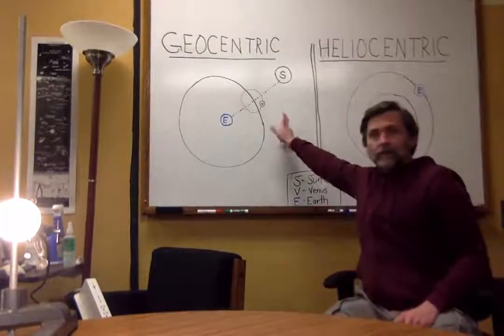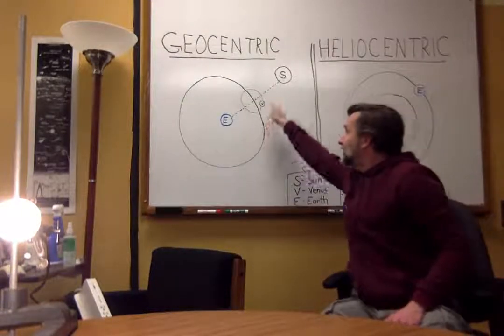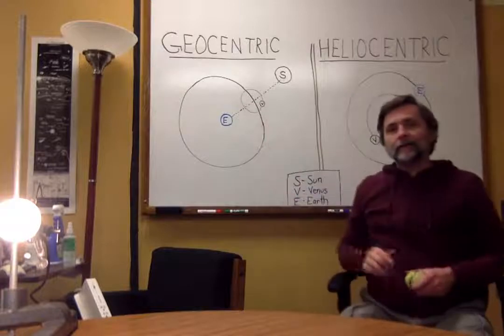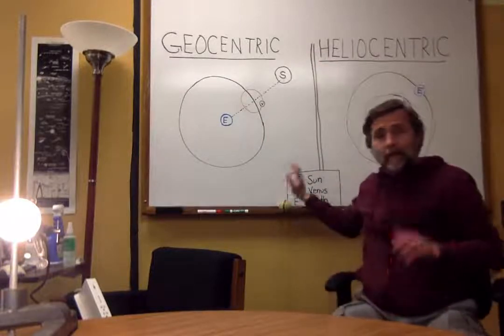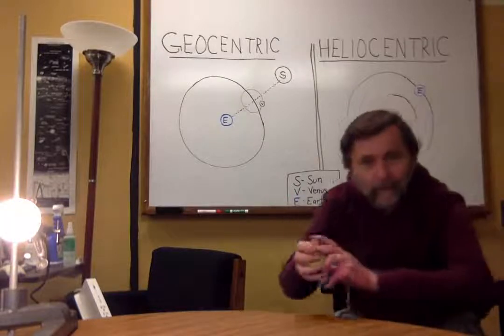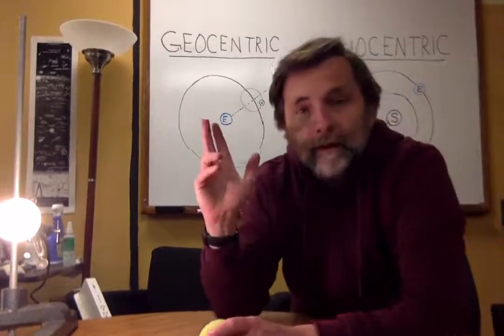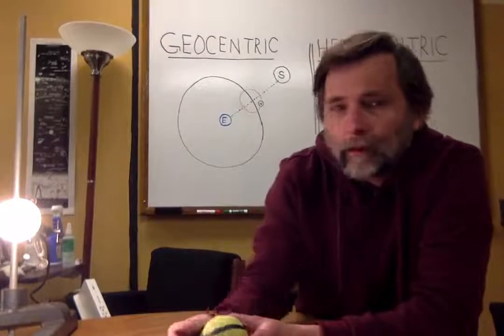But, in the geocentric model, Venus would never get to the other side of the Sun. It couldn't break free. So, that observation alone proved that geocentric model wrong.